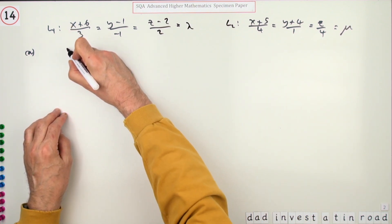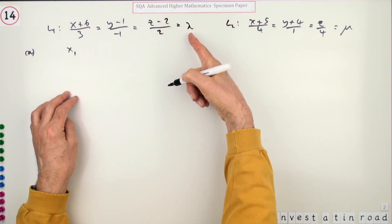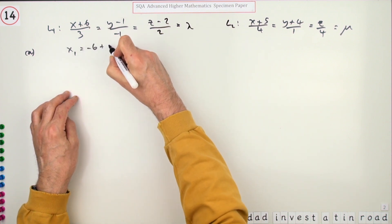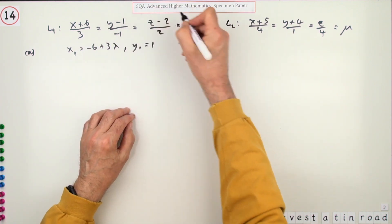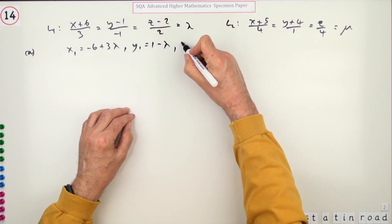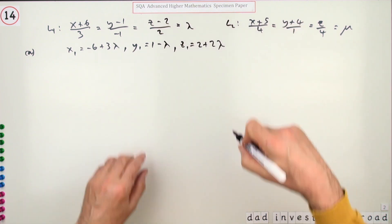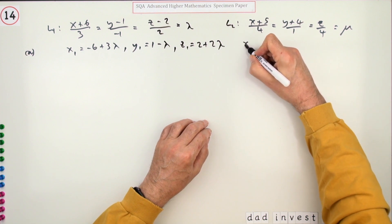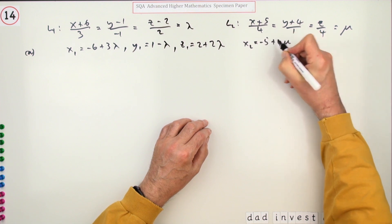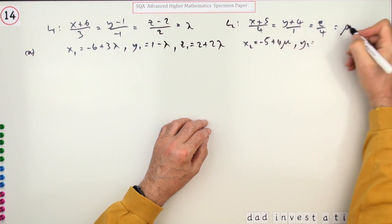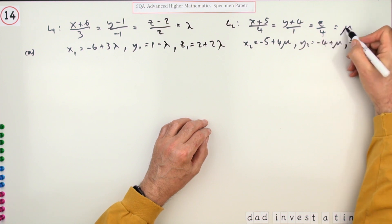For the first line, x1 will be negative six plus three lambda, y1 will be one minus lambda, and z1 will be two plus two lambda. For the second line, x2 will be negative five plus four mu, y2 will be negative four plus mu, and z2 will be four mu.